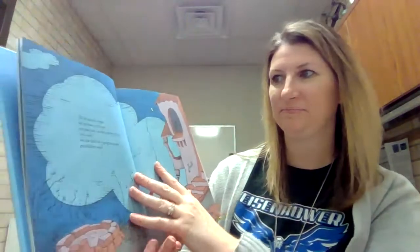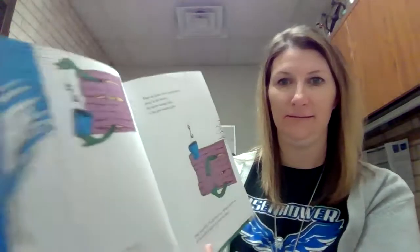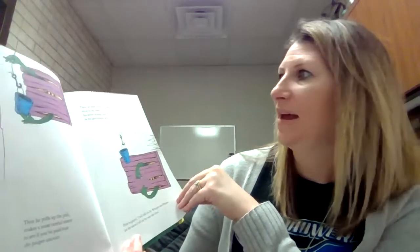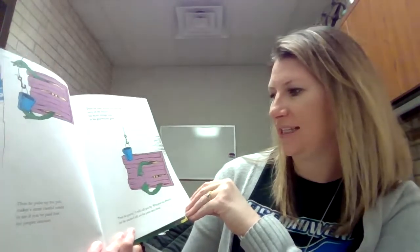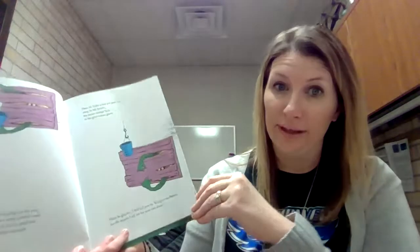There's his house. On the end of a rope, he lets down a tin pail and you have to toss in 15 cents and a nail and the shell of a great-great-great-grandfather snail. See it? Then he pulls up the pail, makes the most careful count to see if you've paid him the proper amount. Then he hides what you've paid him away in his snuvv, his secret strange hole in his gruvvulous glove. Then he grunts, I will call you by whisper-ma-phone, for the secrets I tell are for your ears alone.